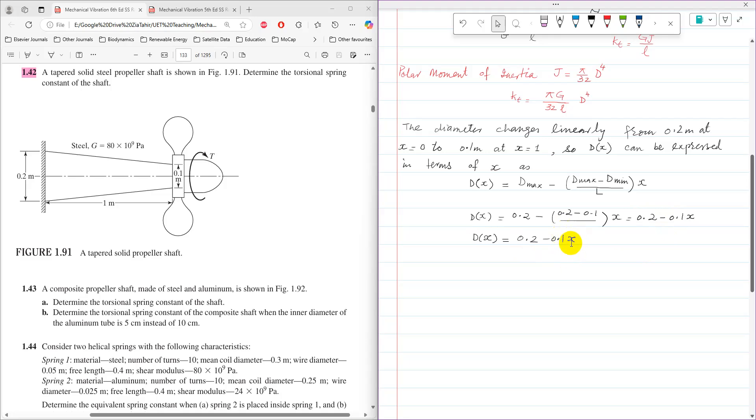0.2 minus 0.1 into X. So once again, when you substitute here X equals 0, so DX equals 0.2 which is equal to the maximum value of diameter, and when you substitute here X equals 1, so it is 0.2 minus 1 which is equal to the minimum value of the diameter.